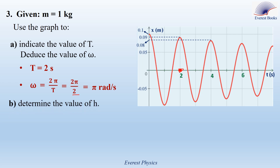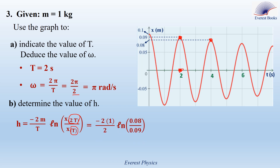Part B: determine the value of h. Using the relation derived previously, we must read from the figure the abscissa of the center of mass at the end of the first oscillation and at the end of the second oscillation. From the graph, x(T) = 0.09 m and x(2T) = 0.08 m. Substituting: m = 1 kg, T = 2 s, x(2T) = 0.08 m, x(T) = 0.09 m. The answer is h = 0.12 kg/s.